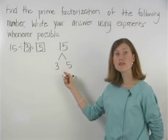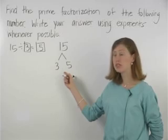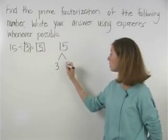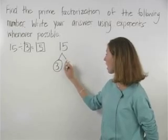Next, circle any prime factors in the factor tree. Since both 3 and 5 are prime, we circle both 3 and 5.